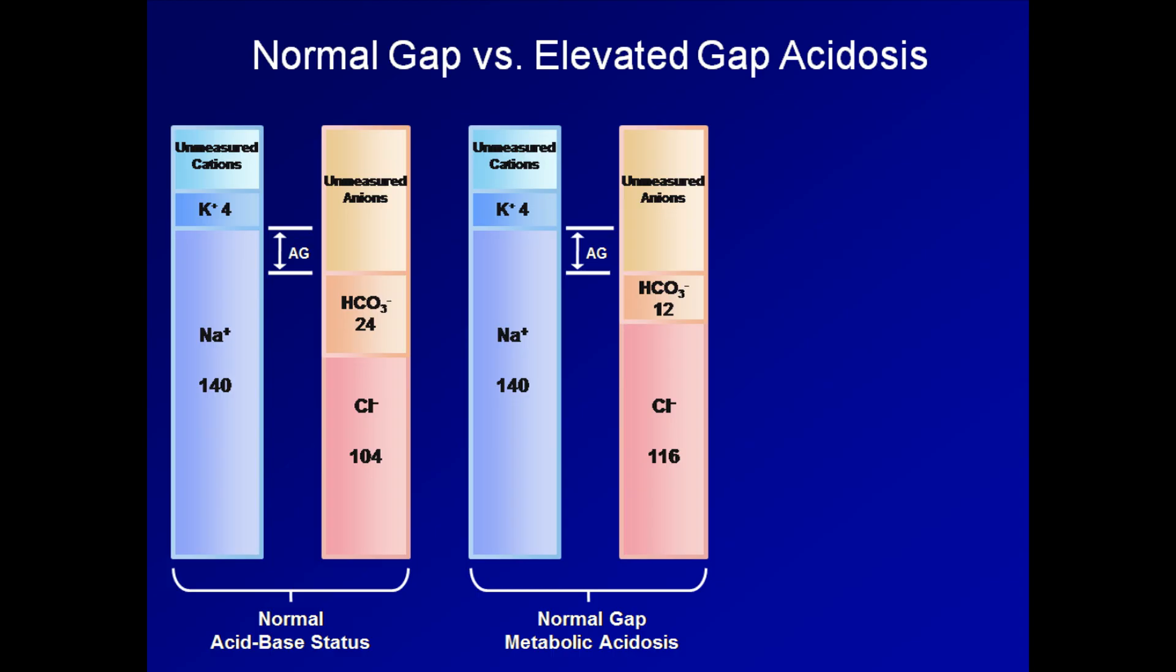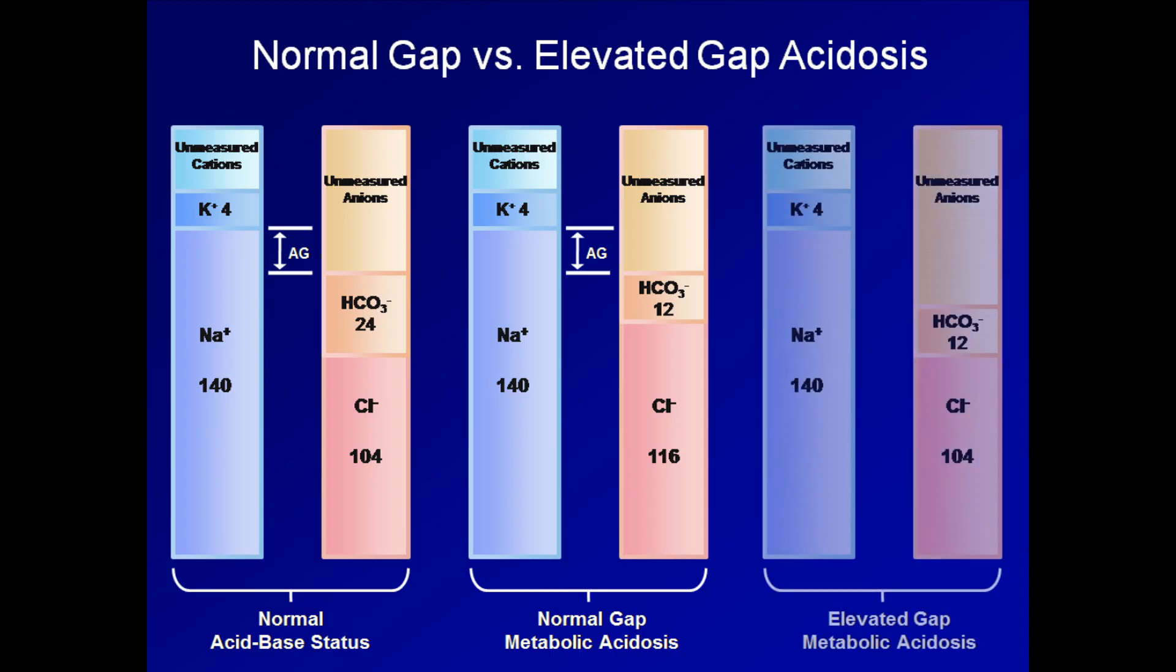Due to the fact that chloride is increased, a commonly used synonym for a normal gap metabolic acidosis is hyperchloremic metabolic acidosis. In an elevated gap metabolic acidosis, there is usually excess production of a pathologic acid, which becomes an unmeasured anion when it dissociates and is buffered by bicarbonate. The bicarb is thus lowered, but chloride is not increased in response, so the anion gap is elevated.